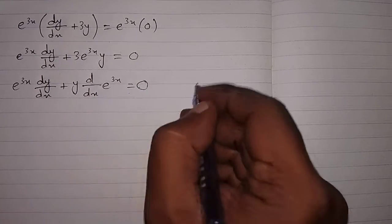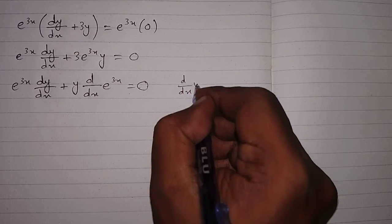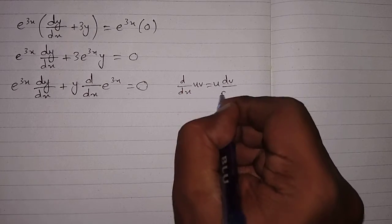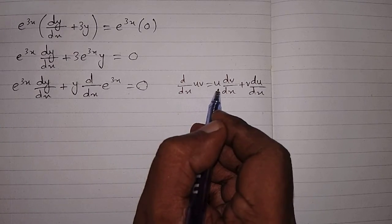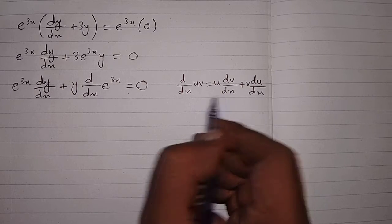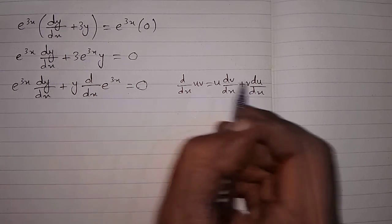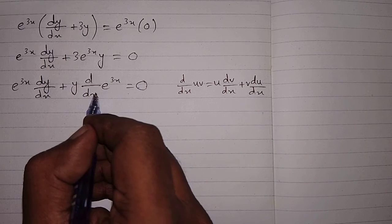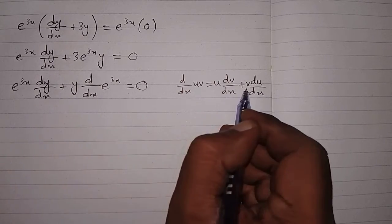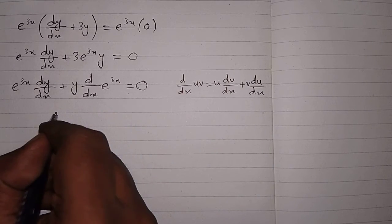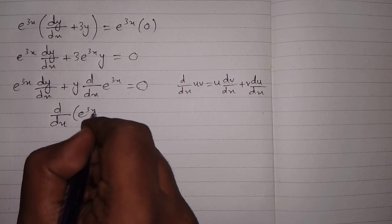Here we can apply the product rule of differentiation, which is d/dx of uv equals u times dv/dx plus v times du/dx. So here we have e to the power 3x in place of u and dy/dx in place of dv/dx, and y in place of v with the derivative of e to the power 3x as du/dx. So we can write this expression as d/dx of (e to the power 3x times y).